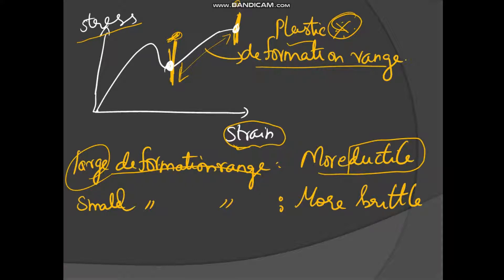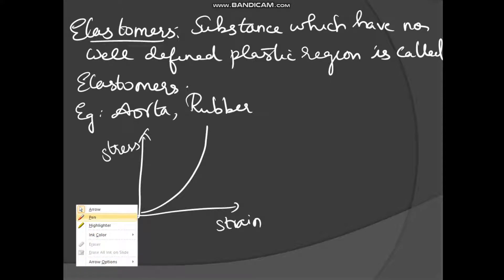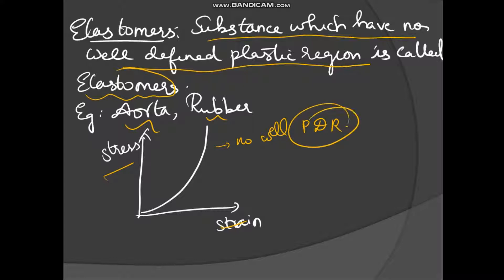If the plastic deformation region is small, then it is more brittle. This is a previous year question and also appears in the NCERT exemplar. Now, elastomers are substances which have no well-defined plastic deformation region — examples are the aorta and rubber. In the elastomer graph, there is no bend, so there is no well-defined plastic deformation region.